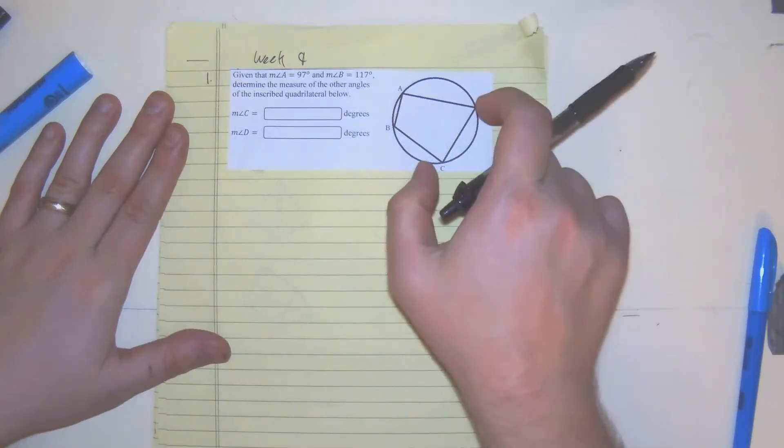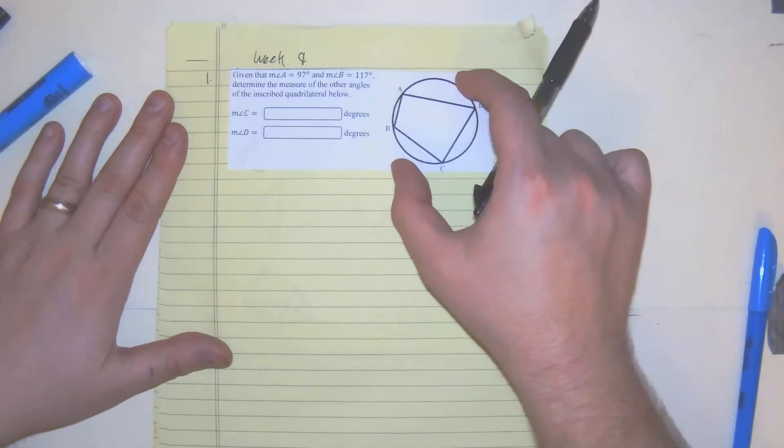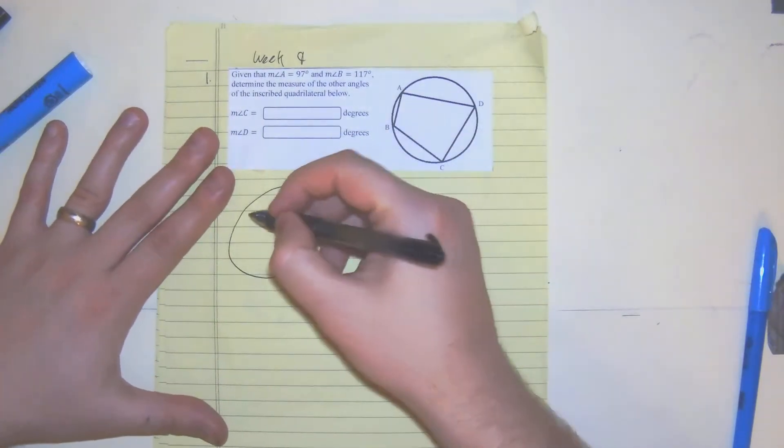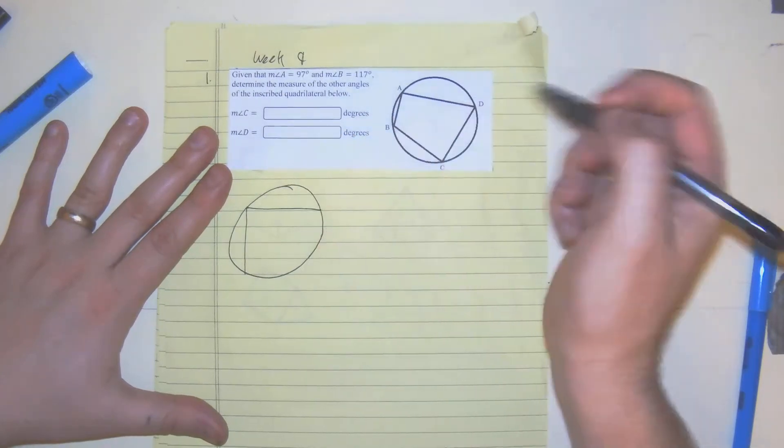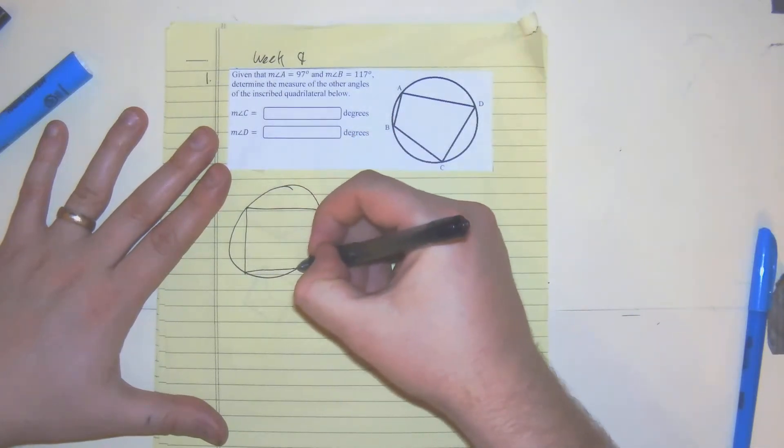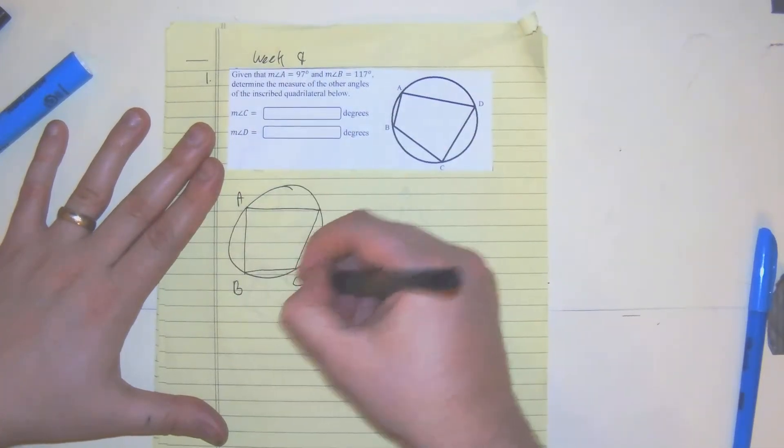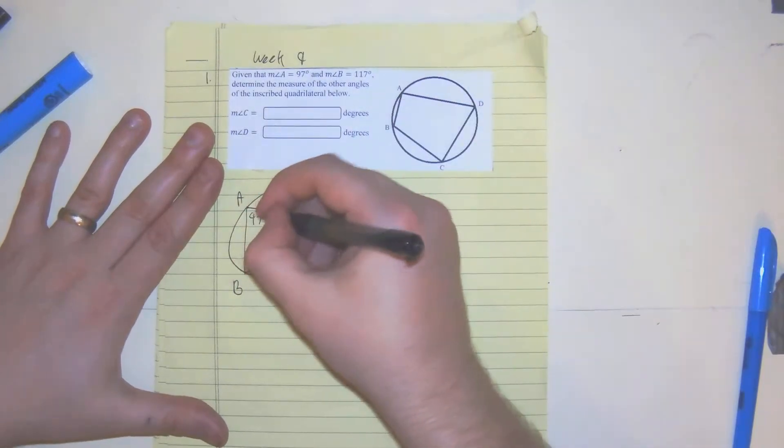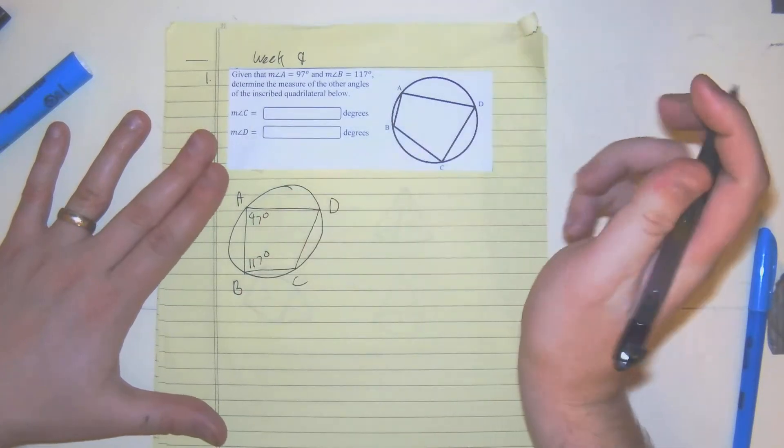So like I've been saying with the other problems, we're going to pretend we don't have this in front of us. What we are going to do is draw a circle, quadrilateral given A, B, C, D. We're going to plug it in - this is 97 degrees, measure of angle B is 117.